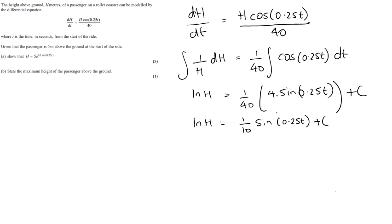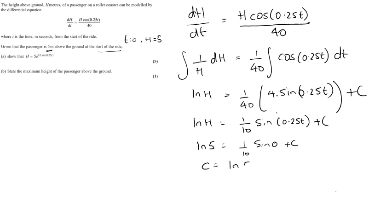Now I need to find c using the information in the question. It says the passenger is 5 metres above the ground at the start of the ride, so t = 0 and h = 5. Substituting: ln 5 = (1/10)·sin(0) + c. Since sin(0) = 0, c = ln 5.